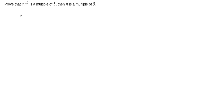In this example, we want to prove that if n squared is a multiple of 5, then n is a multiple of 5. It's always a good idea to start by writing out our propositions. We'll call this our proposition P: n squared is a multiple of 5. Our proposition Q is that n is a multiple of 5. And this if-then is a conditional P arrow Q.